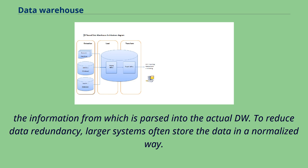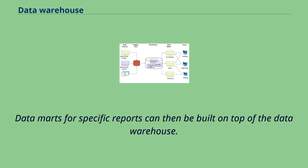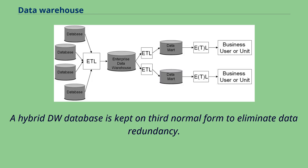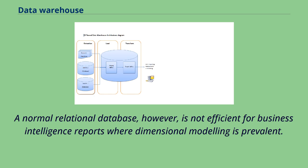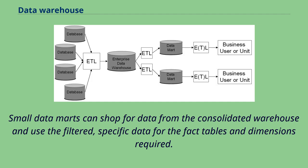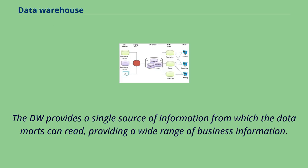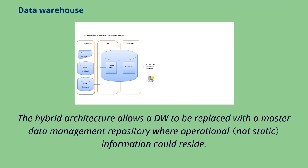To reduce data redundancy, larger systems often store data in a normalized way, with data marts for specific reports built on top of the data warehouse. A hybrid DW database is kept on third normal form to eliminate data redundancy. Small data marts can shop for data from the consolidated warehouse, using filtered specific data for fact tables and dimensions required. The DW provides a single source of information from which data marts can read. The hybrid architecture allows a DW to be replaced with a master data management repository where operational information could reside.